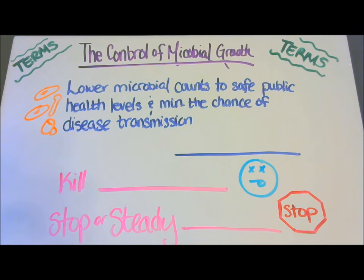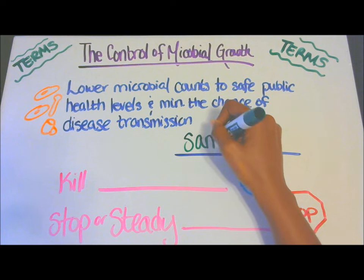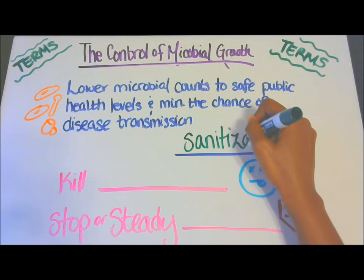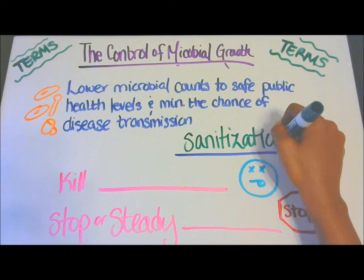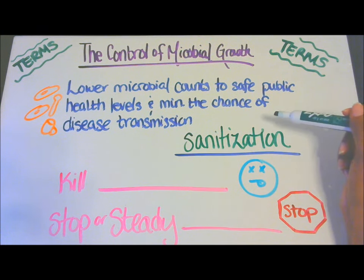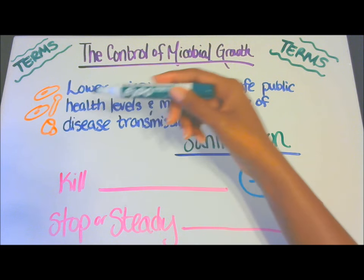Our fifth term: lower microbial counts to safe public health levels and minimize the chance of disease transmission. This is sanitization. When you think of sanitization, you think of restaurants, so here I have dishes to help you remember.